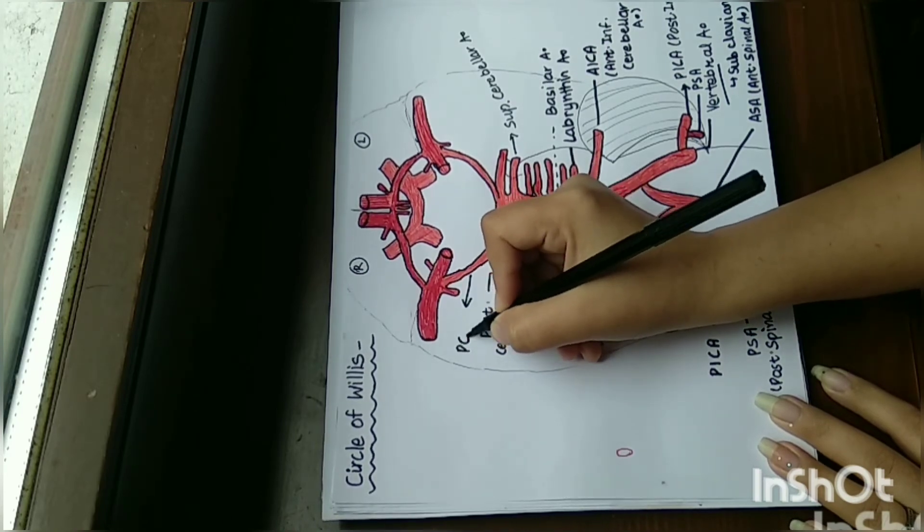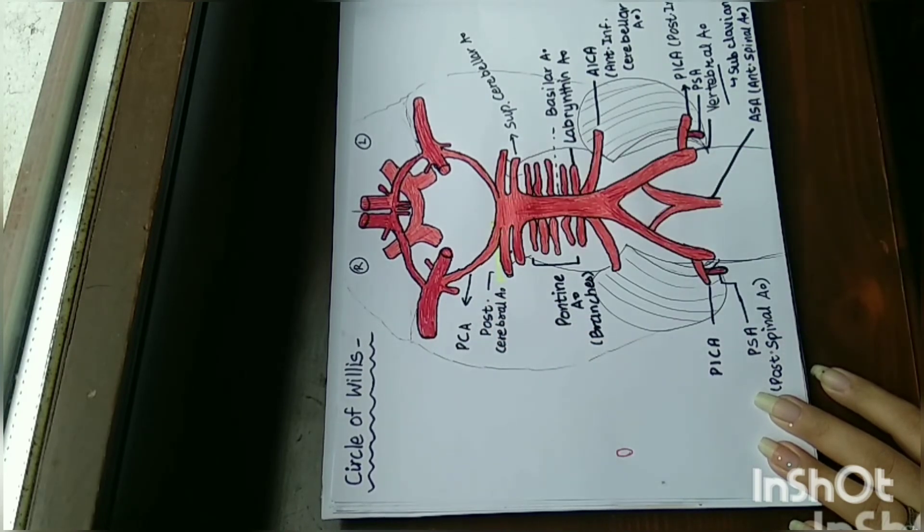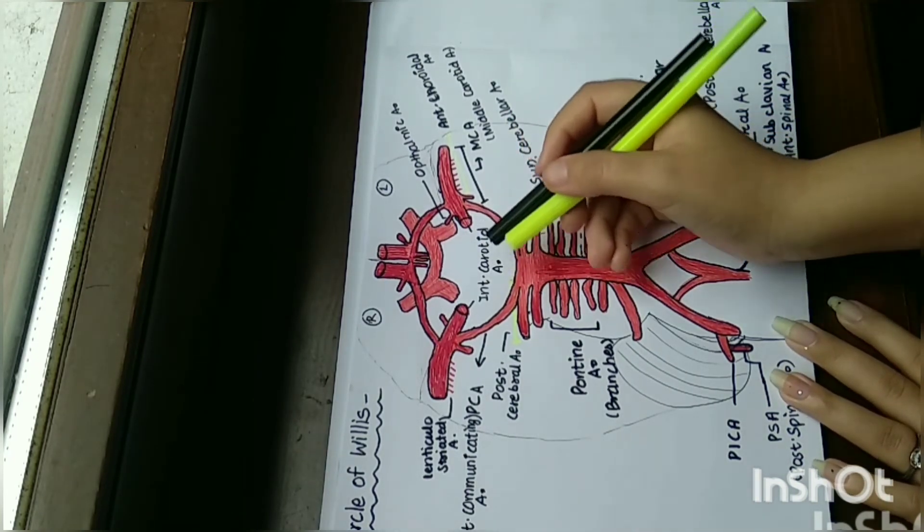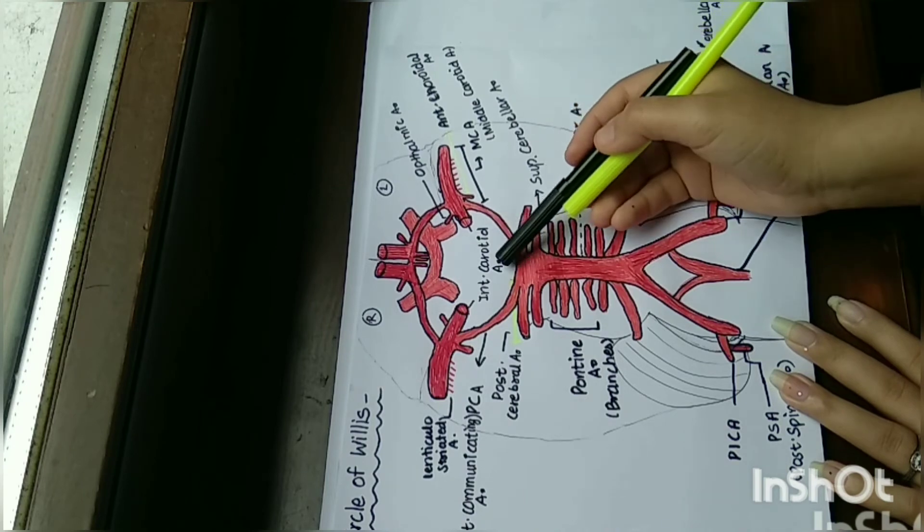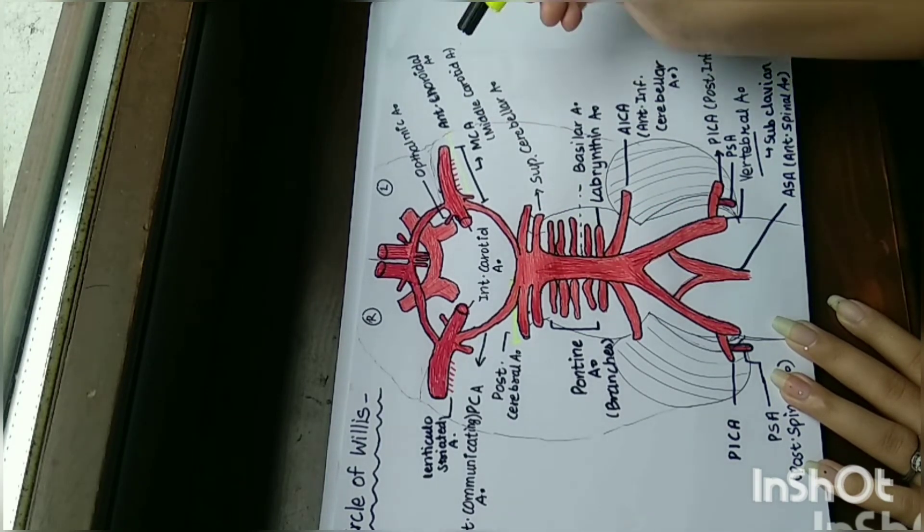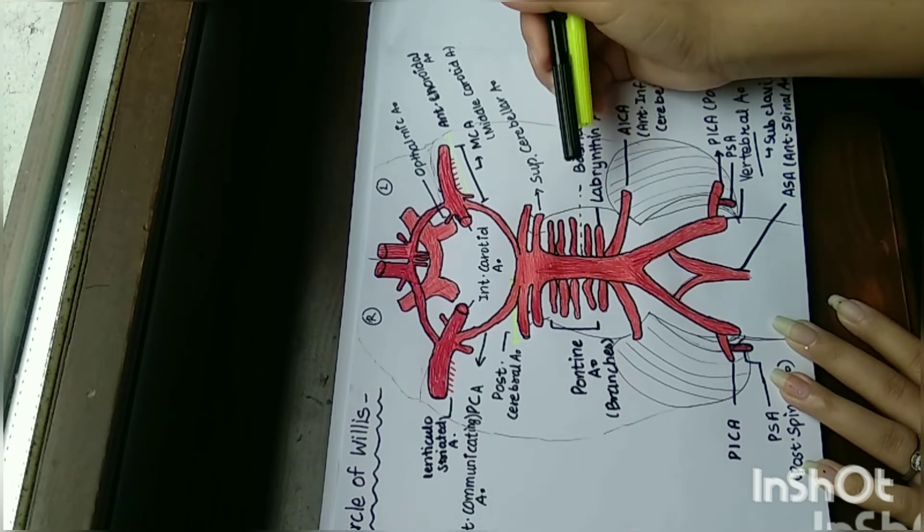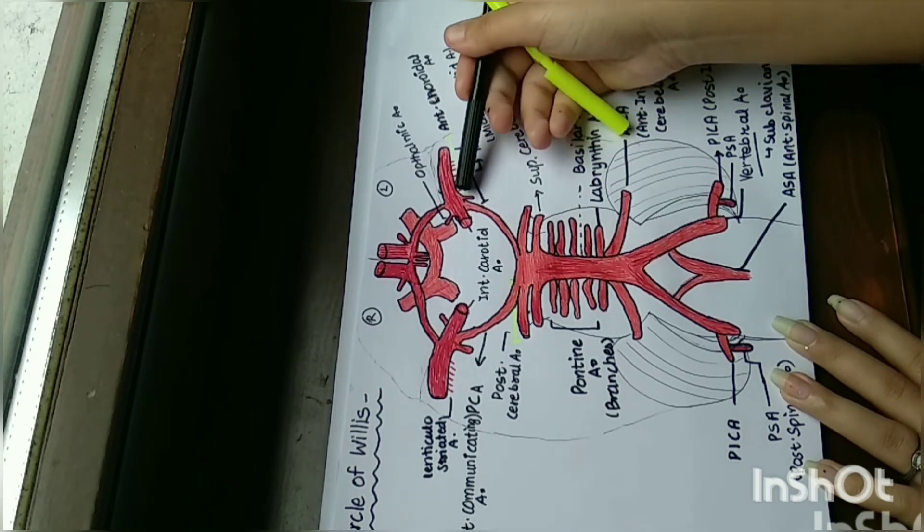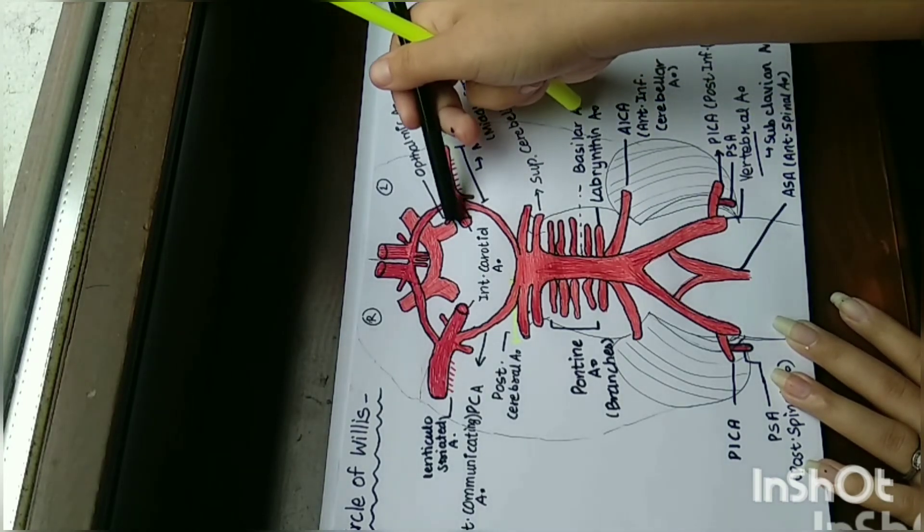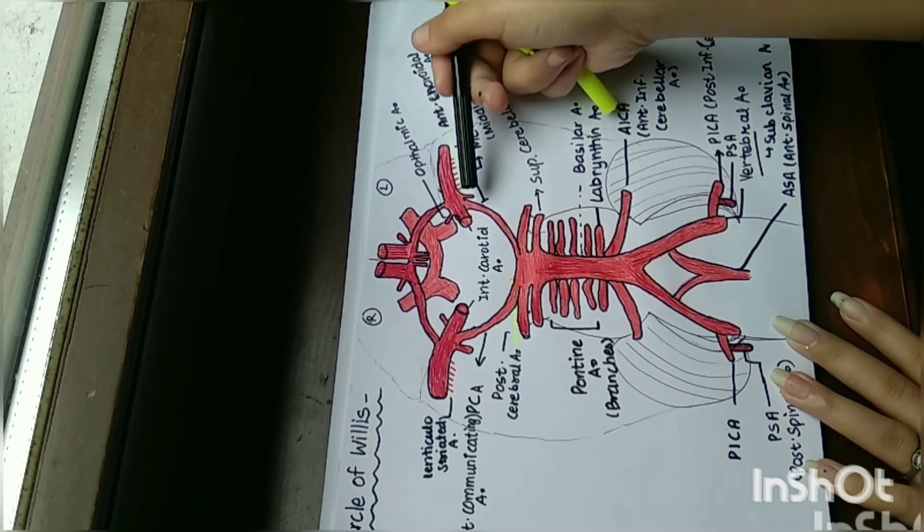Here is the internal carotid artery. The internal carotid artery goes out and forms the middle cerebral artery. Here is an artery which is the anterior cerebral artery. Up there is the ophthalmic artery.